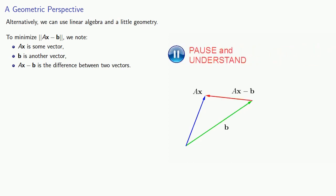So to minimize this norm of Ax minus b, we might note the following. Ax is some vector, b is another vector, and Ax minus b is the difference between two vectors. And if we look at this geometrically, this vector Ax minus b is the vector that joins b to Ax. And we want to make the length of this vector as short as possible.